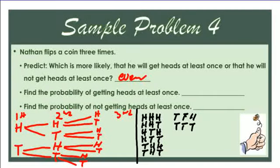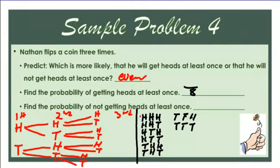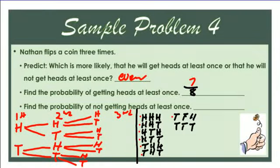We have eight total outcomes. How many have at least one head? Counting: one, two, three, four, five, six, seven — seven out of eight chances is the probability of getting heads at least once. The probability of not getting heads at least once: still eight total, and only one outcome has no heads, so that's one out of eight.